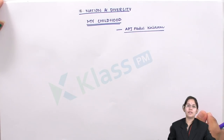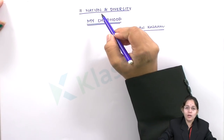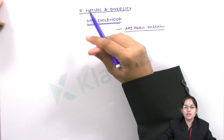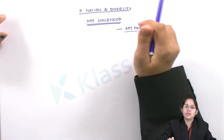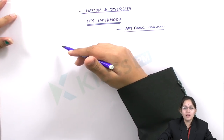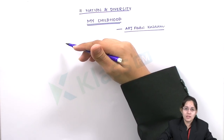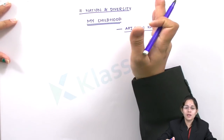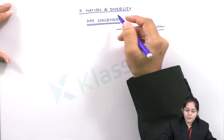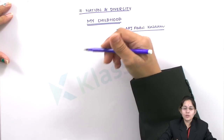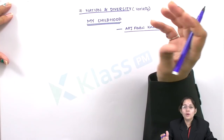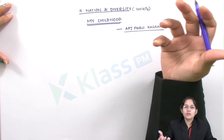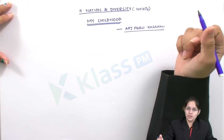Today we will be discussing the seventh unit of your English textbook, titled 'National and Diversity.' Nation refers to a country or state bounded by a certain geographical area — for example, India is a nation, South America is a nation. Diversity means variety. Today we will be discussing how various types of cultures, religions, people and their allied experiences are covered in this lesson.